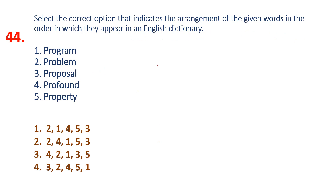Okay, the 44th question: Arrange the words in English dictionary order. PR is most common first. B, G, B, P, F, P, B — B is 2nd first. So 2 B is A.